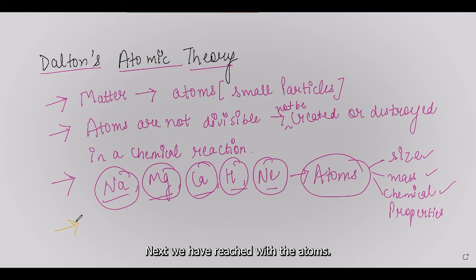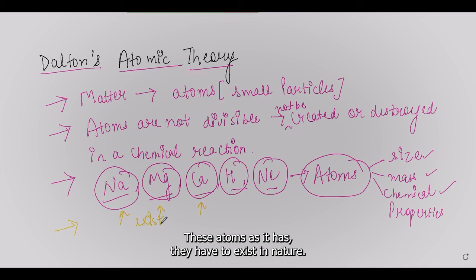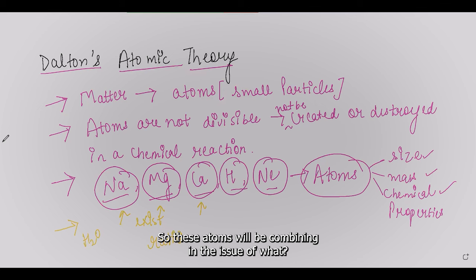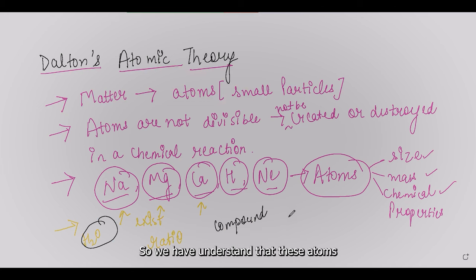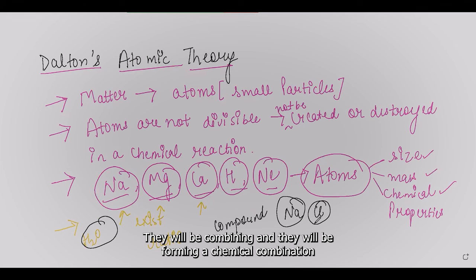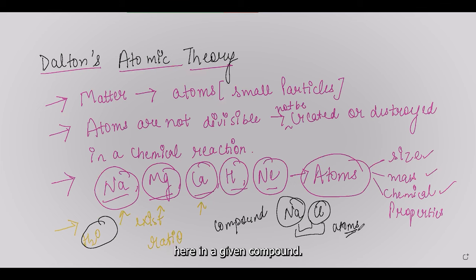The fourth postulate: atoms combine with other atoms in a ratio of whole numbers to form a compound — just as in H2O. For example, sodium atoms and chlorine atoms combine chemically to form a compound so they can exist in nature. The relative number and kinds of atoms in a given compound are constant.